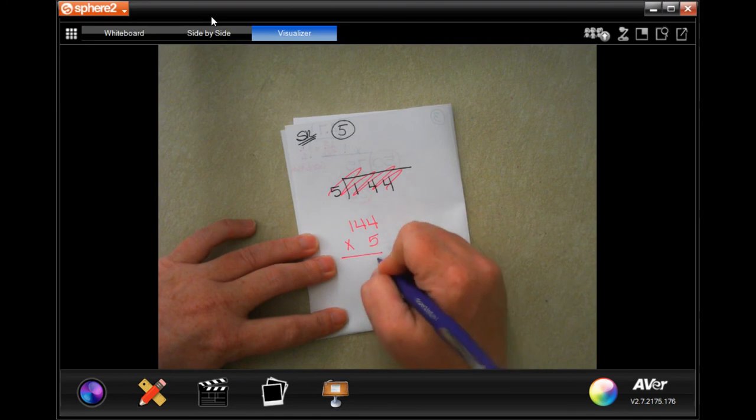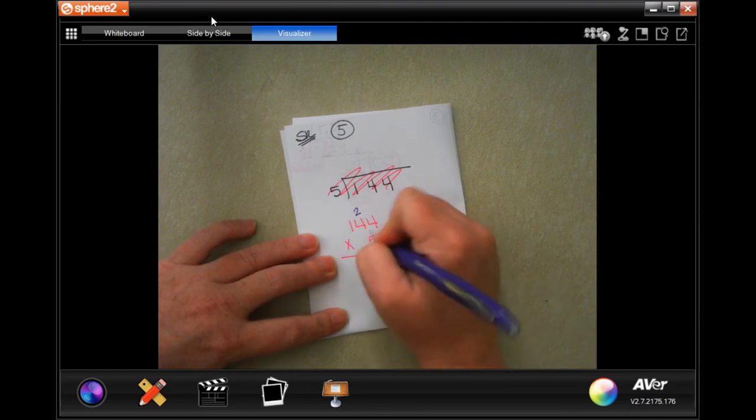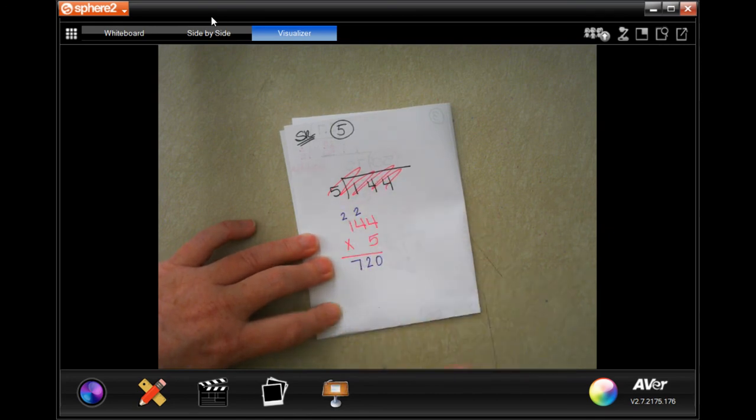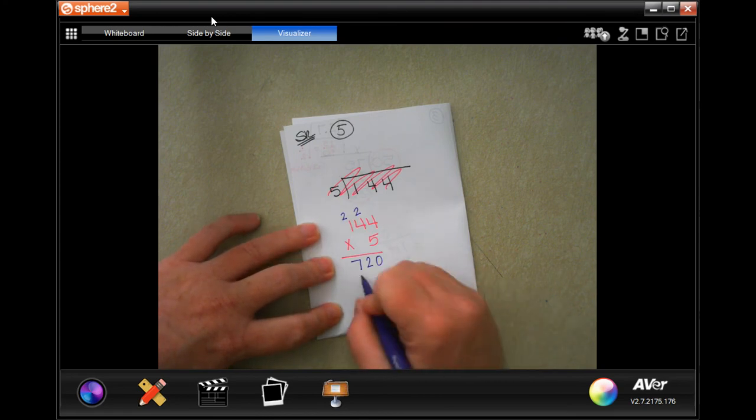So, 5 times 4 is 20. Carry that 2. 5 times 4, again, is 20, plus 2 more is 22. Carry that 2. 5 times 1 is 5, plus 2 more is 7.